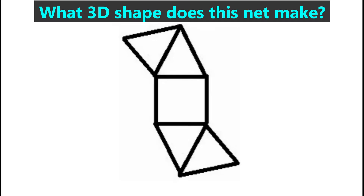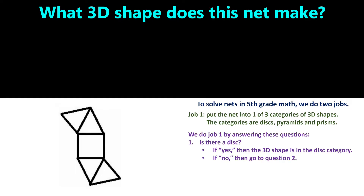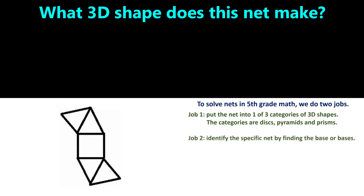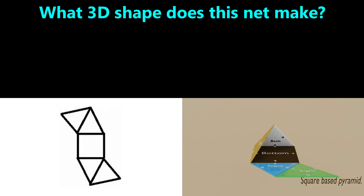Here's another example. Applying Job 1: there is no disk, so we go to question 2 — are there more than two triangles? We count four triangles, which is greater than two, so this net makes a pyramid. Moving to Job 2, for pyramids other than a triangular pyramid, the base is the one shape that is not a triangle. In this case we find a square, so it's the base. This is a net for a square pyramid.